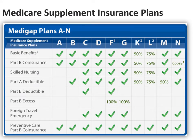Available through private insurance companies, Medicare supplement insurance covers the financial gaps in Medicare's deductibles, co-insurance, and co-payments. The Medicare supplement insurance benefit chart details each lettered Medicare supplement plan and its coverage. None of the plans cover Part D prescription drugs — if you want drug coverage with a supplement plan, you must purchase a standalone prescription drug plan. Plan F covers 100% of all Medicare deductibles, co-insurance, and co-payments. At a lower monthly premium, Plan F with a high deductible is also available from some insurance companies.